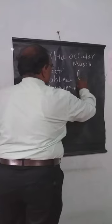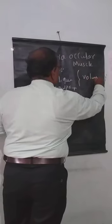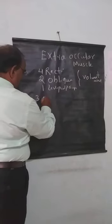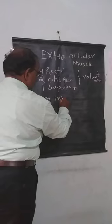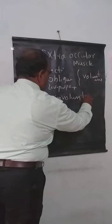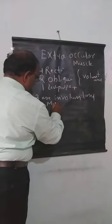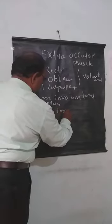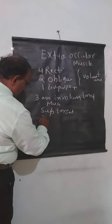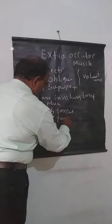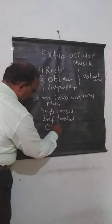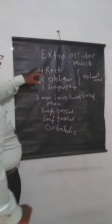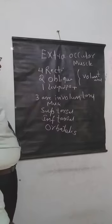These seven are all voluntary muscles, and three are involuntary muscles. The three involuntary muscles are: superior tarsal, inferior tarsal, and orbitalis.